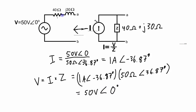We're back to our original voltage source with the series impedance. These source transformations — from a voltage source with series impedance to a current source with parallel impedance, or vice versa — are quite simple. They are an application of Norton's theorem going from voltage to current source, or Thevenin's theorem going from current to voltage source. I hope you learned something in this video, and I'll see you in the next one.